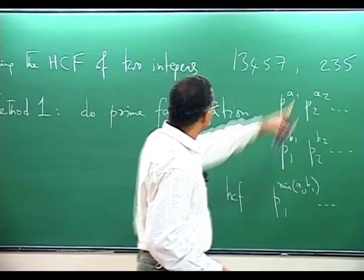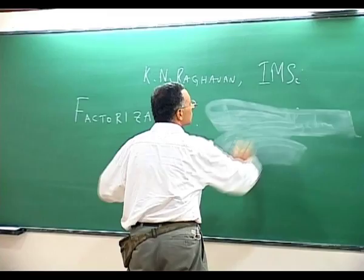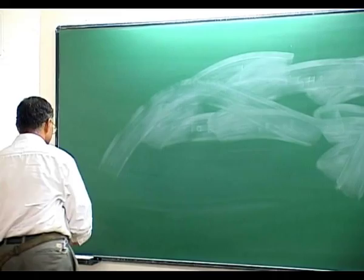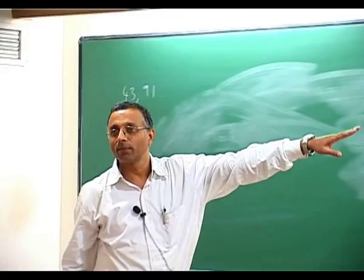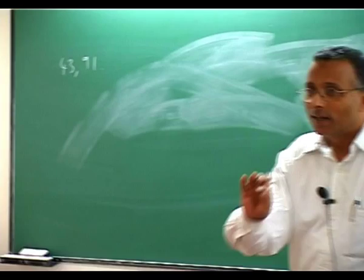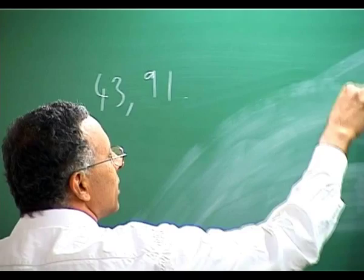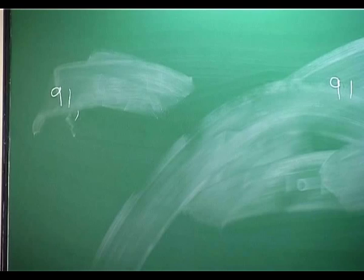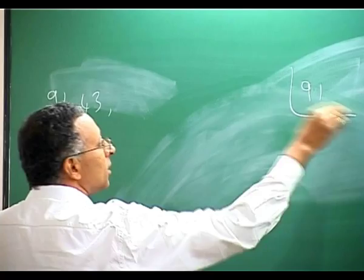Let us do an example. Let me do 43 and 91 and find their HCF. I take 91; 43 is less than that. I divide 91 by 43, which gives me quotient 2 and remainder 5. I take this 5 and put it there. Then I take 43 and divide by 5, getting quotient 8 and remainder 3. I put 3.